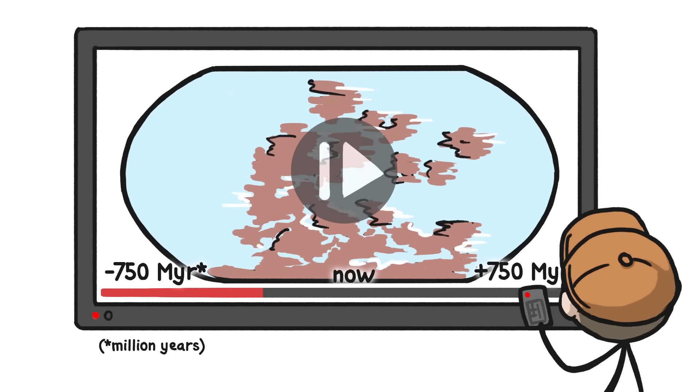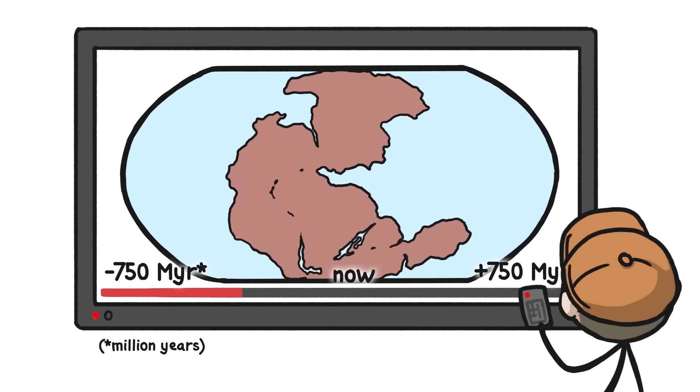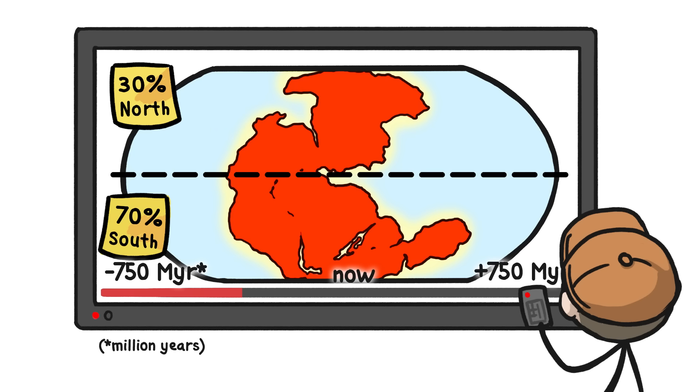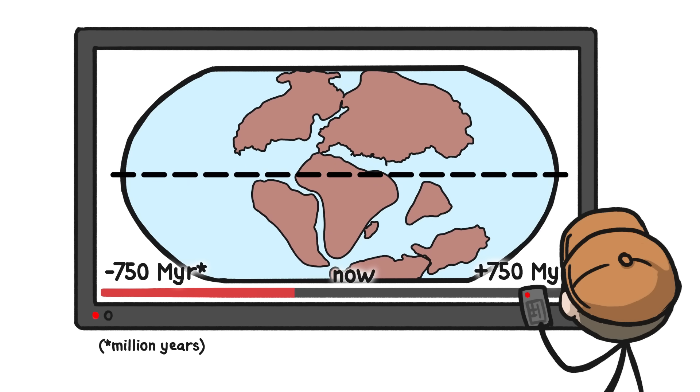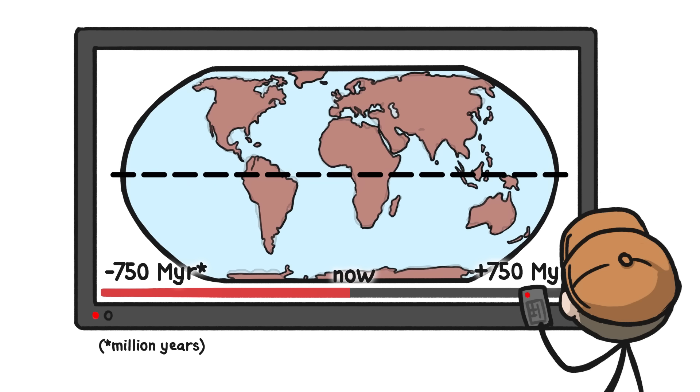So if you pause the Earth movie at Pangaea 250 million years ago, 70% of the land would have been in the south. Around then though, a combination of lots of extra heat bubbling up in the south and a downwelling of slightly cooler molten rock in the north started pulling most of the continental plates slowly towards the north-heavy arrangement we're so familiar with.